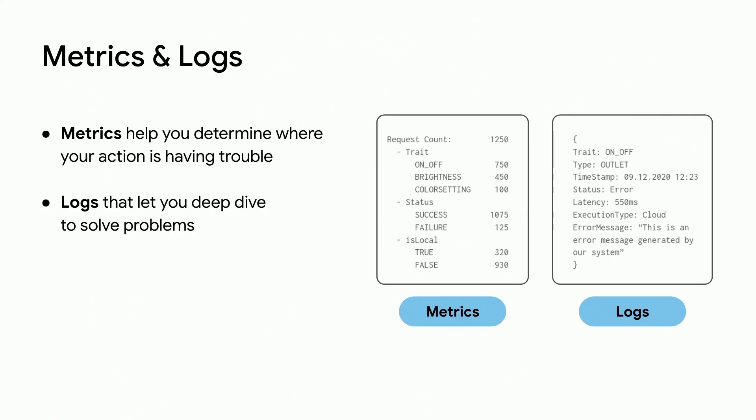Metrics are counters that represent the user interactions with your devices and provide breakdowns on various components. And logs are JSON-like strings that contain the details for those interactions, which is especially useful for things like storing an error message.